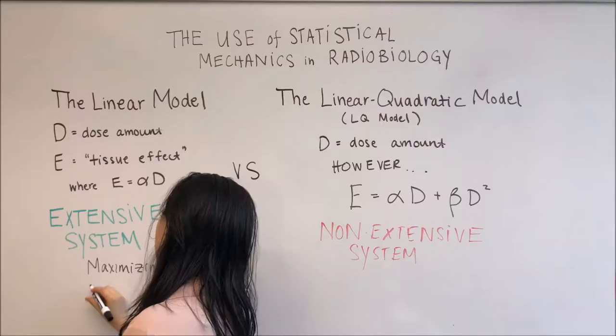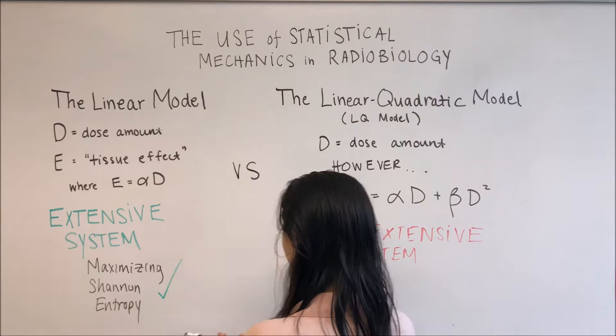At this point, we have now entered the non-extensive regime, and we are unable to maximize the Shannon entropy for an accurate probability distribution.